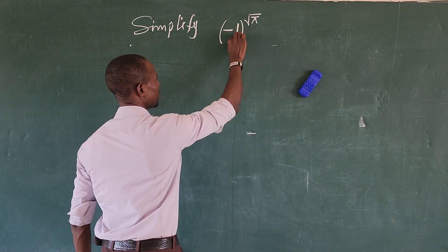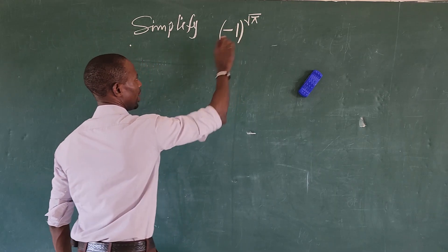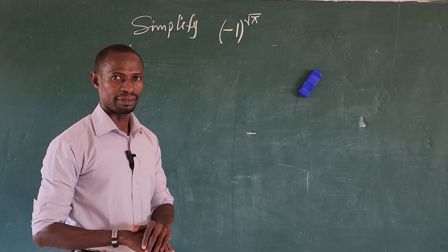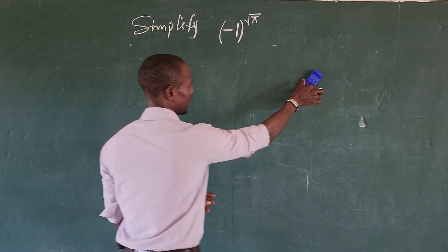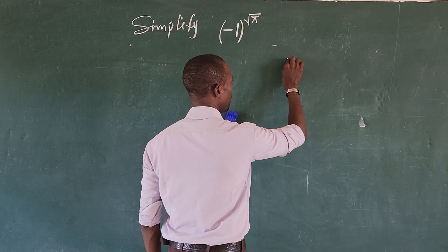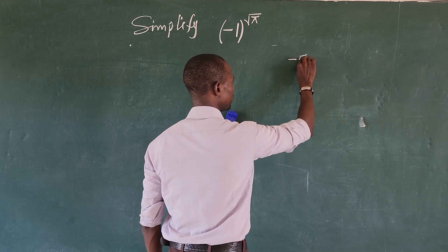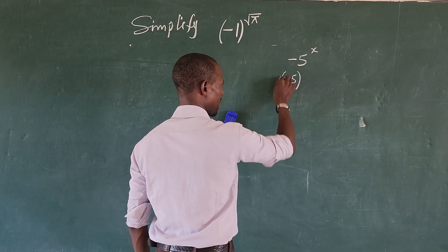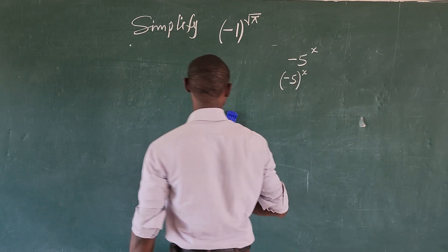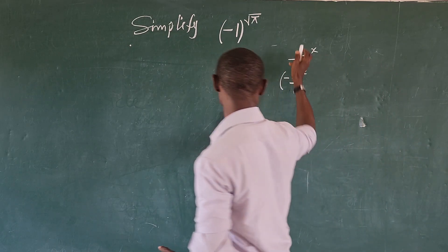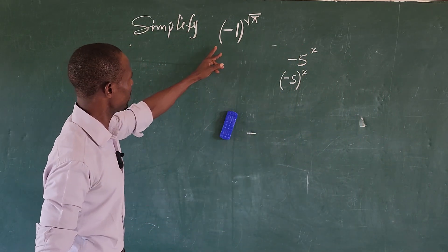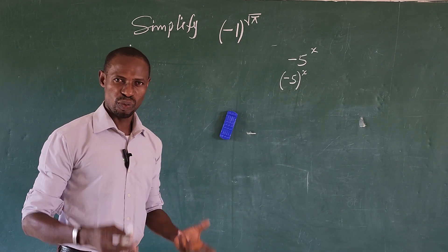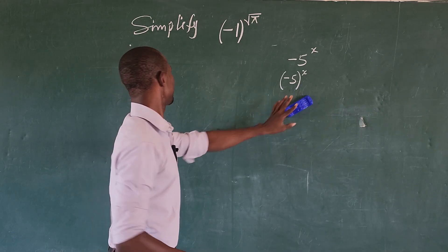Before going to this challenge, there is a special lesson I gave before where I said that minus five to the power of x is different from (minus five) to the power of x. There is a difference between those two expressions. What we have here now is (-1) all in a closed bracket, raised to the power of square root of pi.